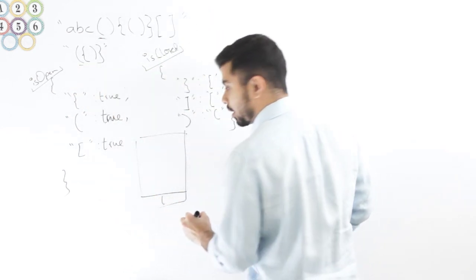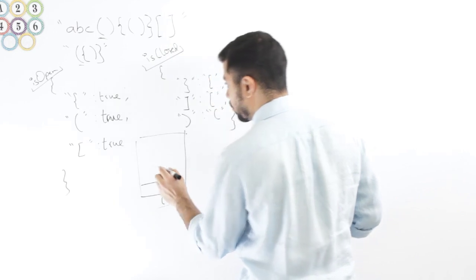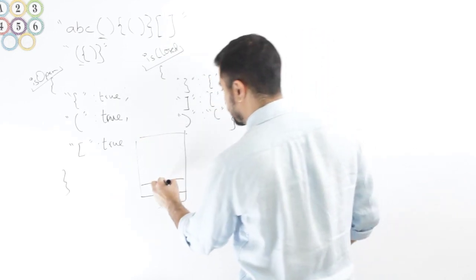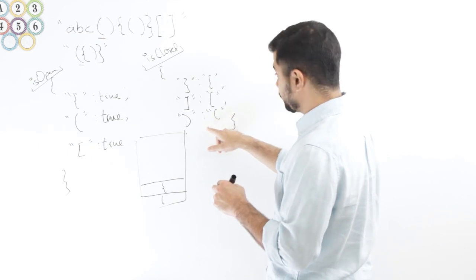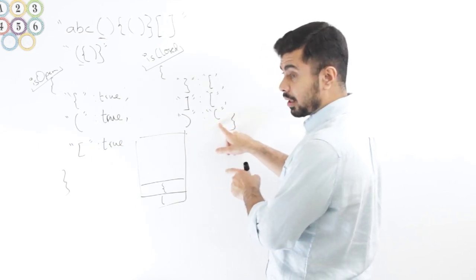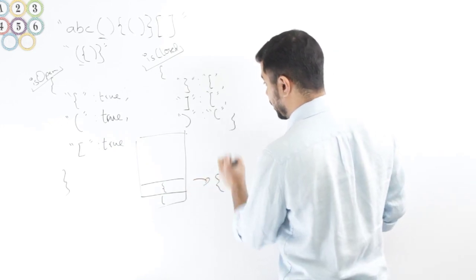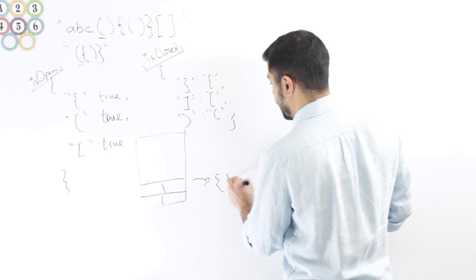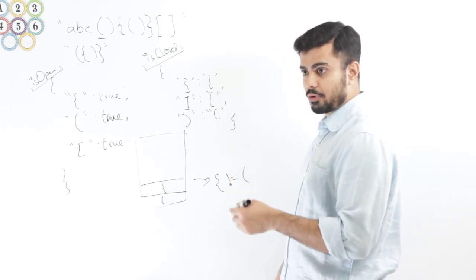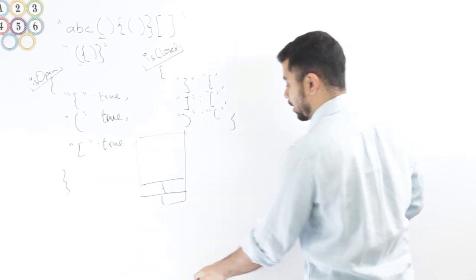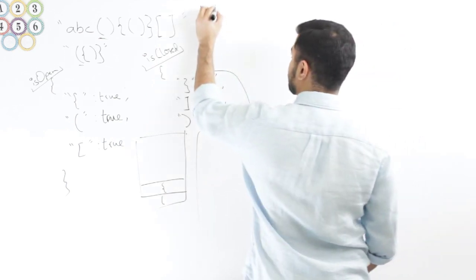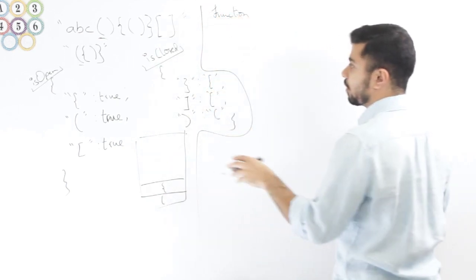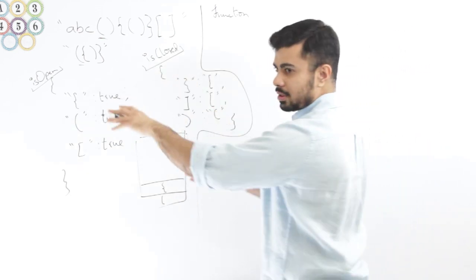If they are the same, everything's good and I move on. If they're not, I know the string is not valid and I can stop right there. Let's walk through the invalid example: whenever there's an open one I push it, so I push the curly. Now I encounter a closed regular — I look it up, pop the stack, I get a curly, which is not the same as an open regular. So it's not valid and I return false.